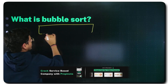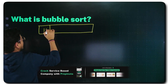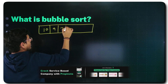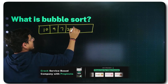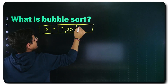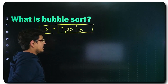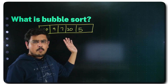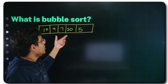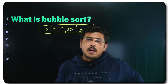Consider that you have an unsorted array which is 10, 9, 7, 20, and 5. This is a properly unsorted array, no sorting at all. Now we apply Bubble Sort to this — how do we apply Bubble Sort to this?